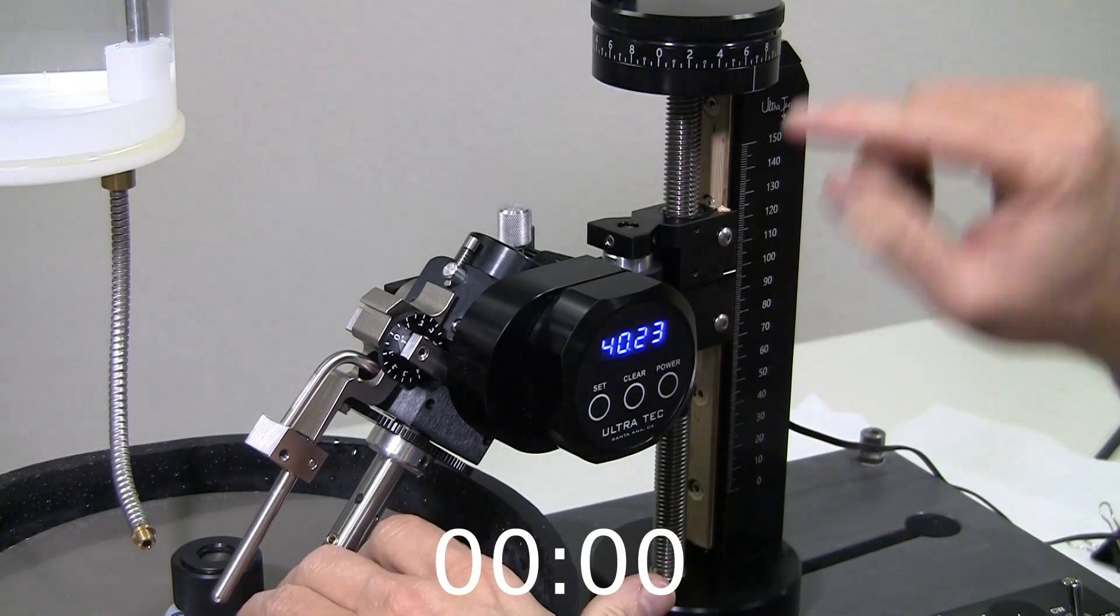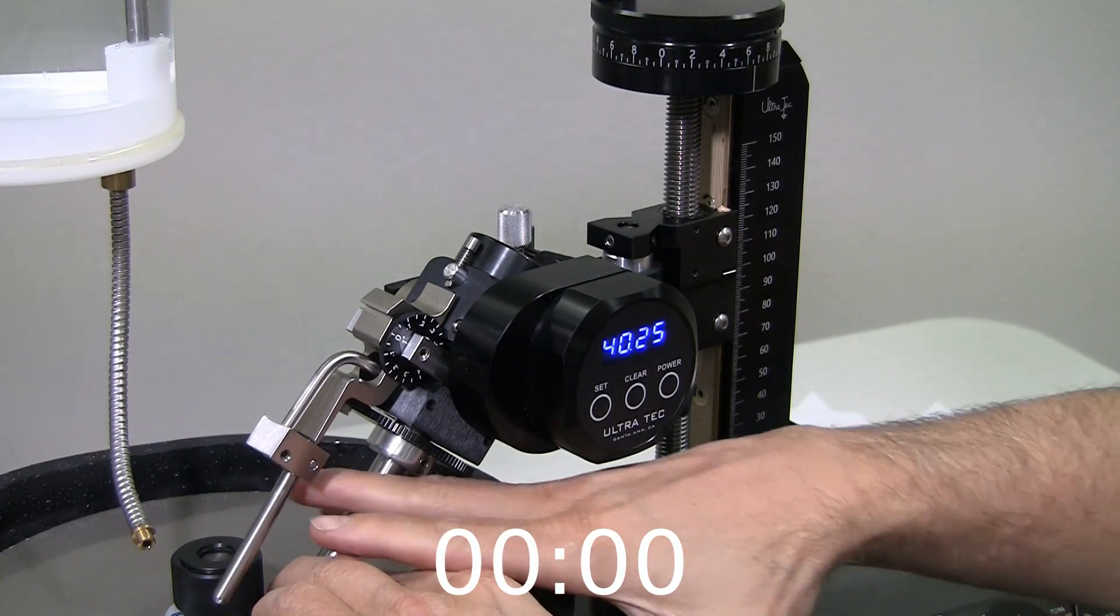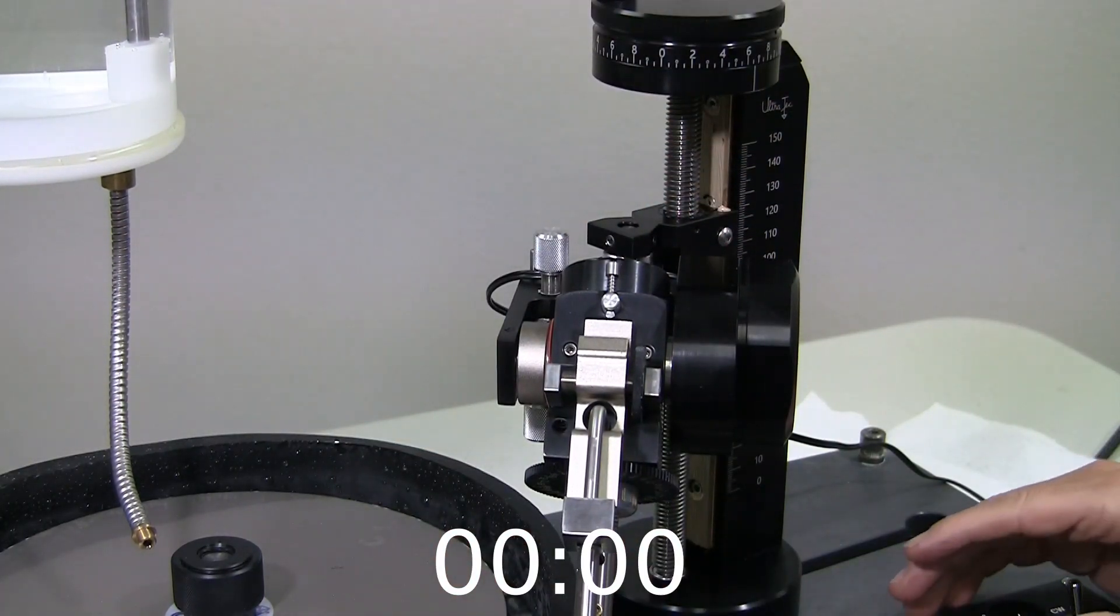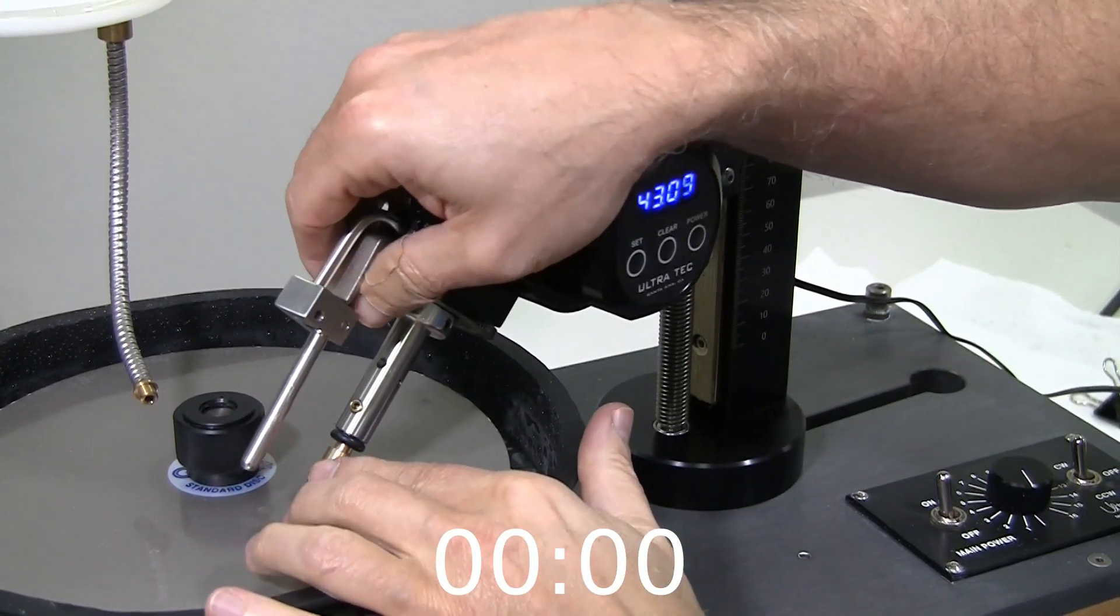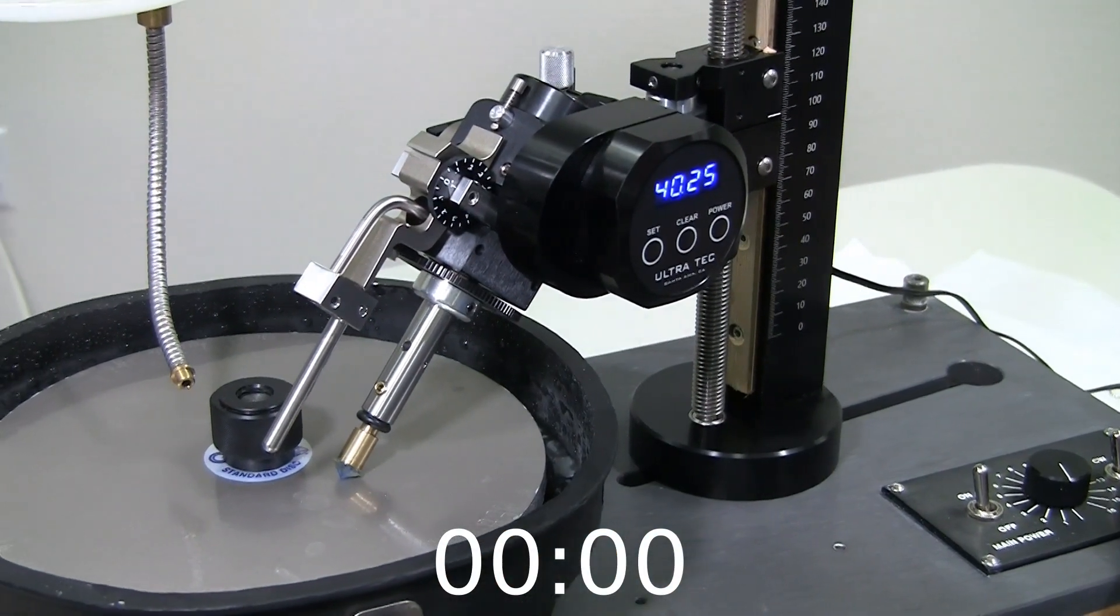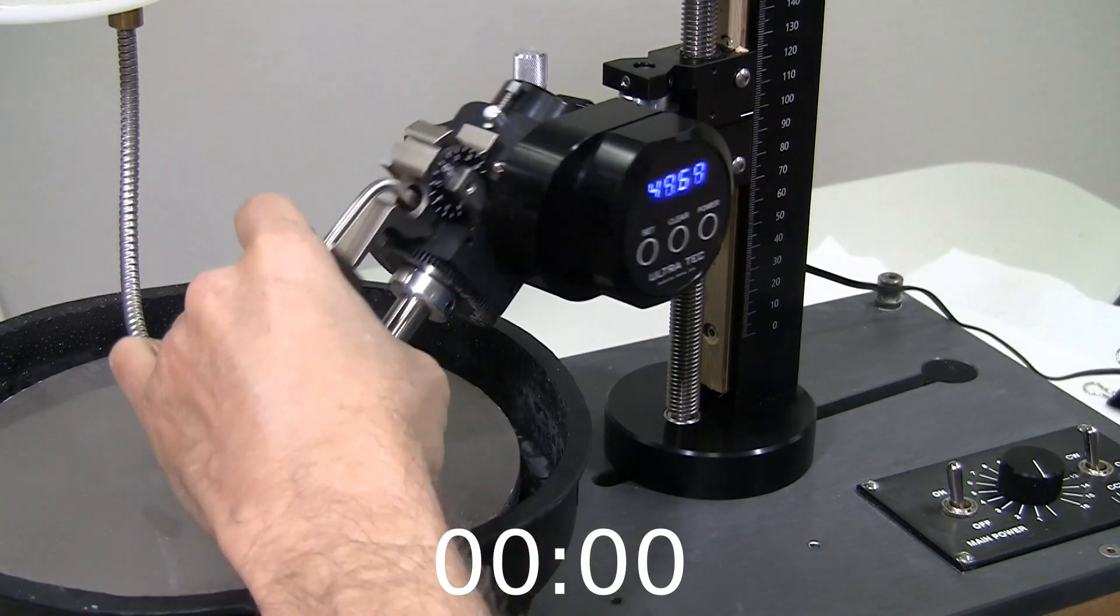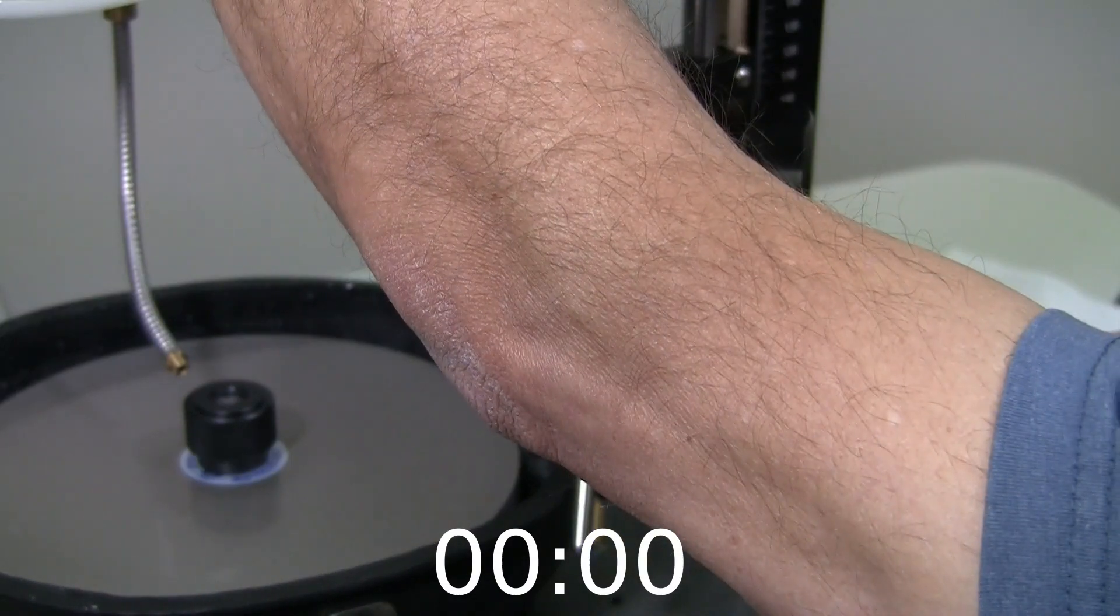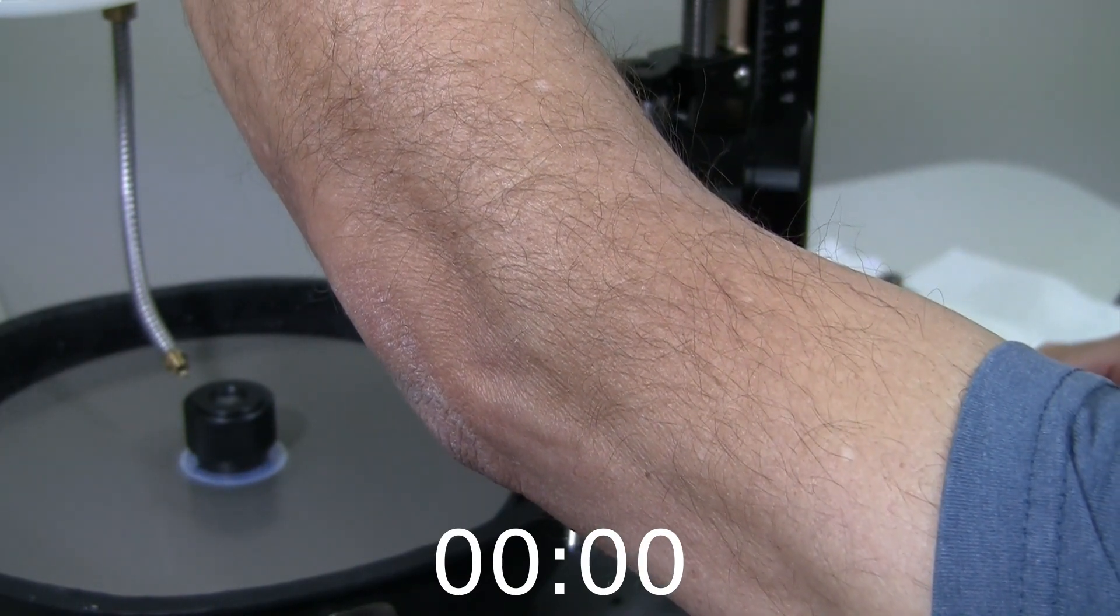We've set up a quarter of a degree worth of travel for material removal. Let's start some water. Let's make sure we can see the stone on the lap. That looks about right. Let's start up some water. And again, we'll spin up our lap to a pretty good speed.